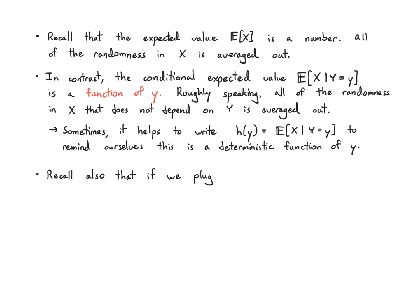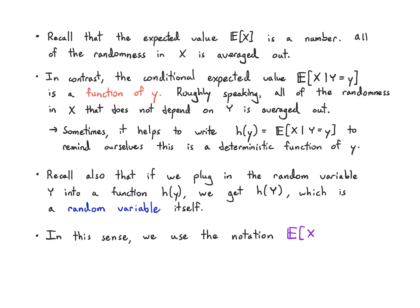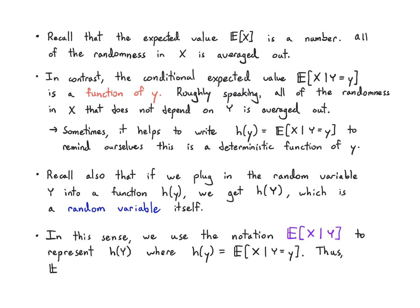If I plug the random variable back into this function h of y, we know that what we're getting is a function of a random variable, which is itself a random variable. So if I have a function and I plug in a random variable, I get another random variable. In this sense we can use the notation E of X given capital Y to represent h of capital Y, where h of y is just the conditional expectation for a given value of y. So E of X given capital Y is actually a random variable.